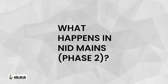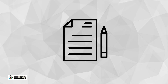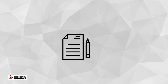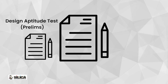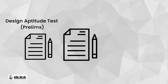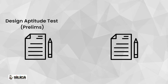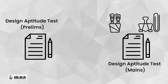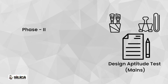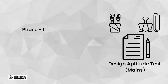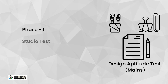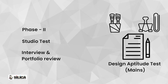What happens at NID Mains Phase 2? Students who clear NID Phase 1 are selected for the NID Phase 2 exams, also known as the design aptitude test. In Phase 2 of NID and other reputed design colleges, students face a studio test followed by an interview and portfolio review.